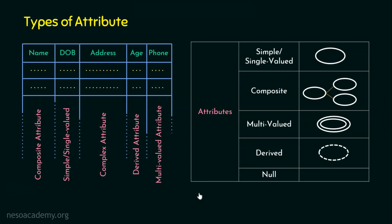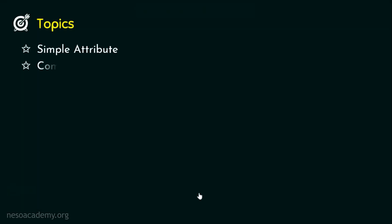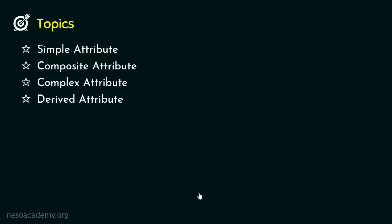I hope you have now understood the different types of attributes: simple attribute, composite attribute, complex attribute, derived attribute, and multi-valued attribute. I hope the session was informative. I will see you in the next presentation. Thank you for watching.